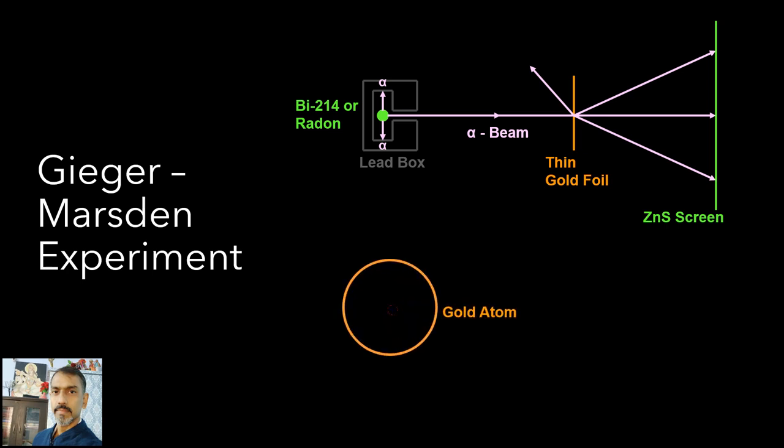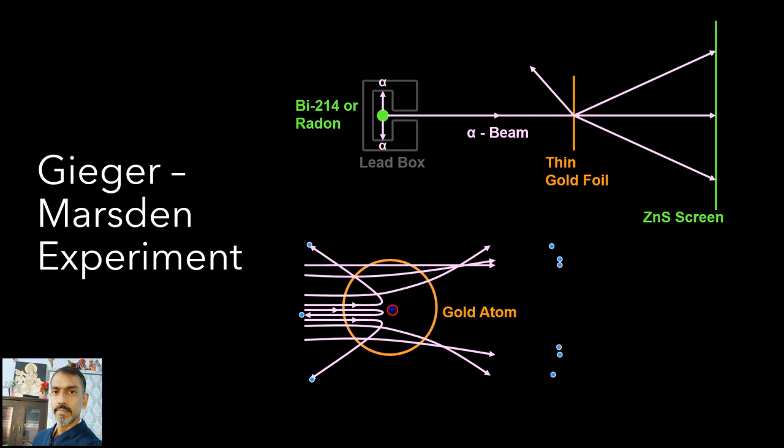It was observed that the beam of alpha particles scattered in various directions. Many of the alpha particles pass through the foil, meaning they do not suffer any collisions. Only about 0.14% of the incident alpha particles scatter by more than 1 degree, and about 1 in 8000 deflect by more than 90 degrees.